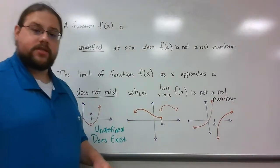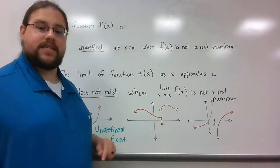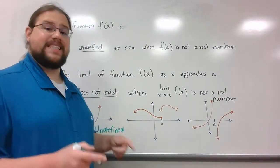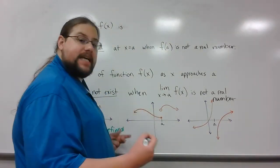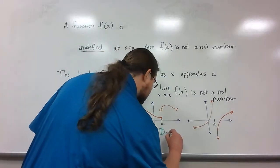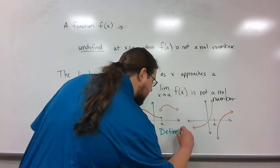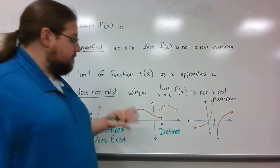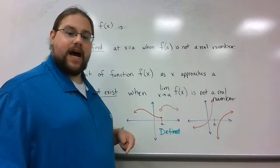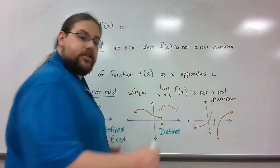Let's look at the next one. In this case, we have a closed dot here right above a. That means it is defined for a. It's whatever the value of that closed dot is. However, if I try to look at the limit, the limit from the left approaches the closed dot, while the limit from the right approaches the open dot.